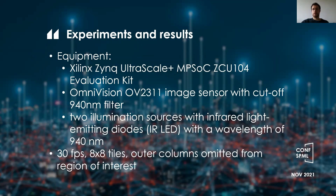For the experiments, the listed equipment was used. The wavelength used in this setup was 940 nanometers. There are several constraints in the system, like 30 fps. Also, the image was divided into 8 by 8 tiles, and regarding the region of interest, the outer columns have been omitted because the face is rarely positioned in those edge columns of the image with the current setup. The main idea of the laboratory tests was to examine the convergence speed and the number of oscillations present in the mean brightness value signal.